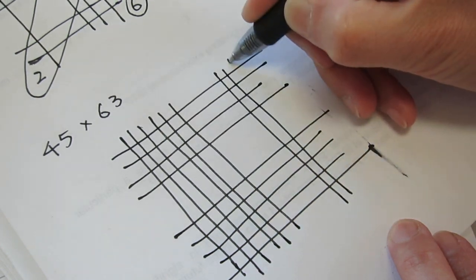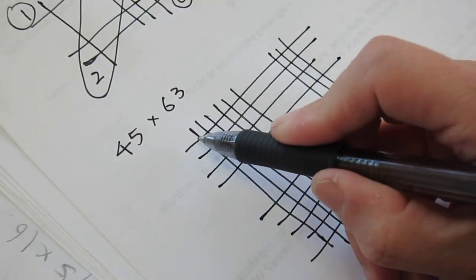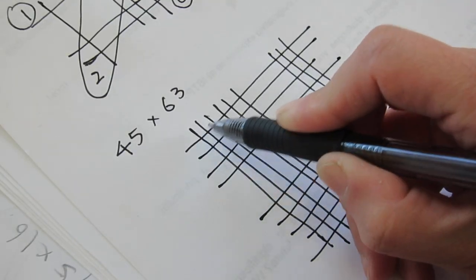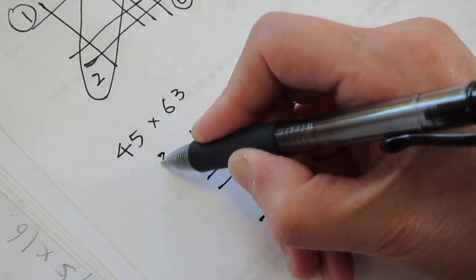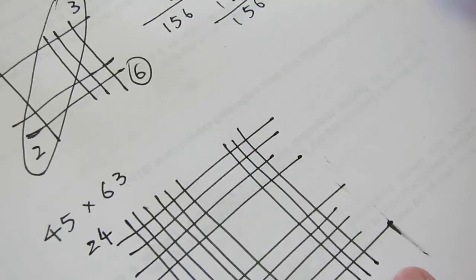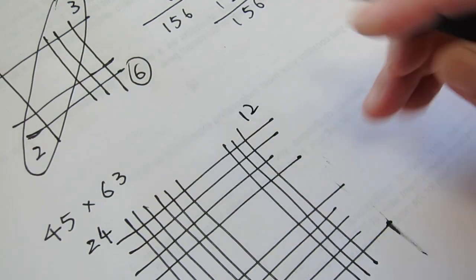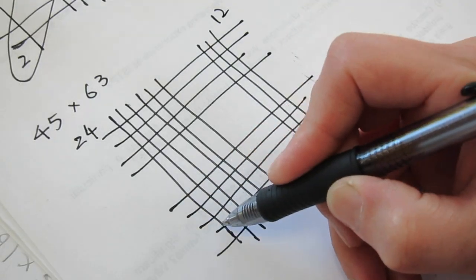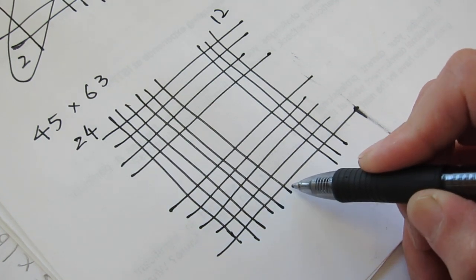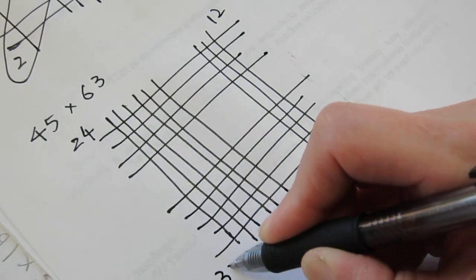So this is 1, 2, 3, 4, and 6. 4, 6, 24. And this is 3 by 4, 12. And this one is 1, 2, 3, 4, 5, by 1, 2, 3, 4, 5, 6. 5, 6, 30.